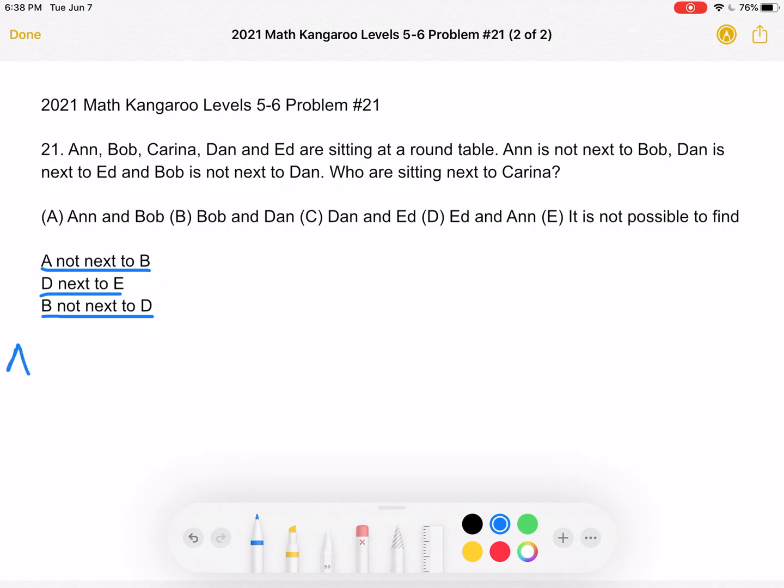Well, we know we have these five people, A, B, C, D, and E, and it's a round table, so each person will have one person sitting on their left, one person sitting on their right.